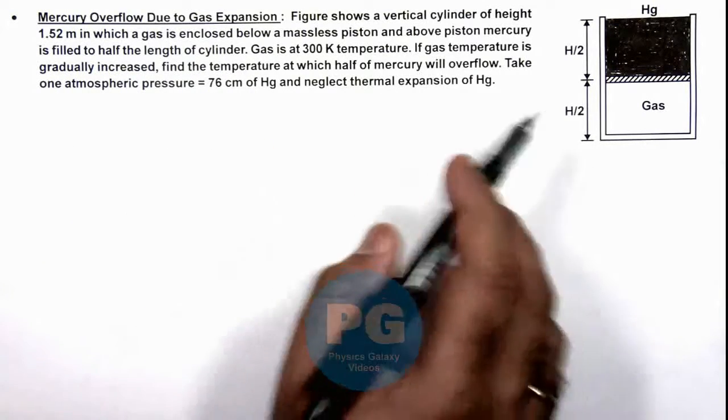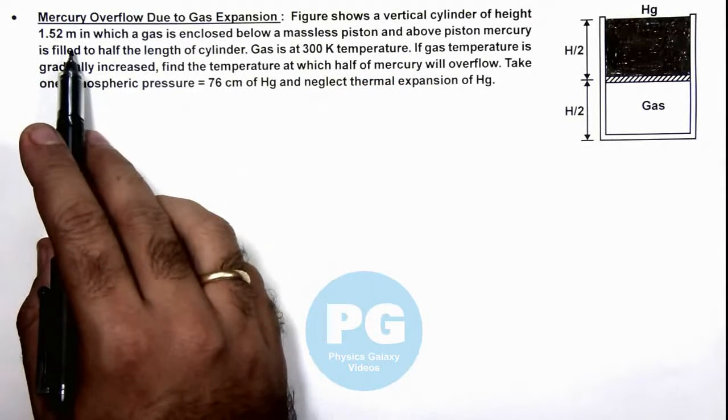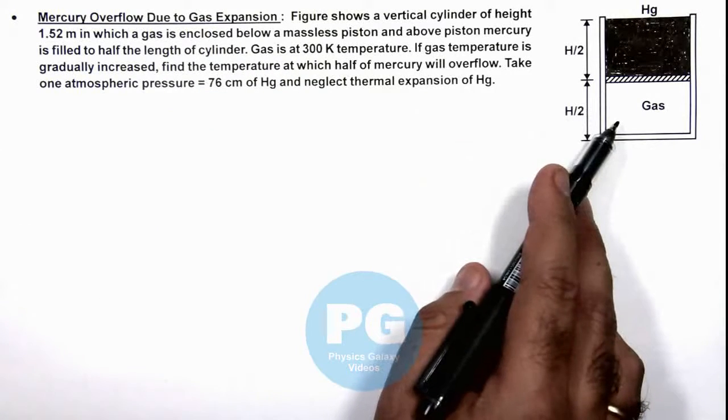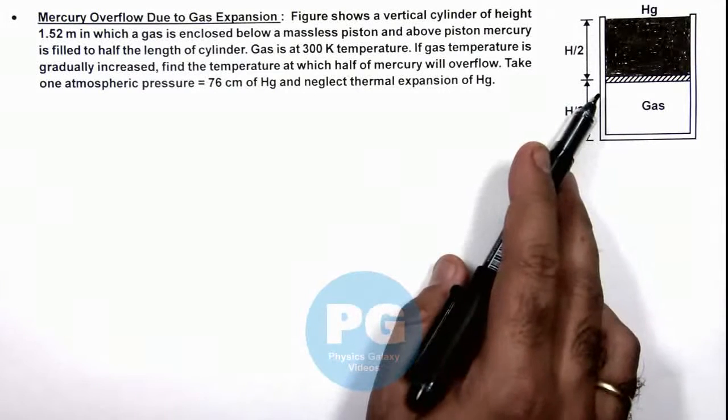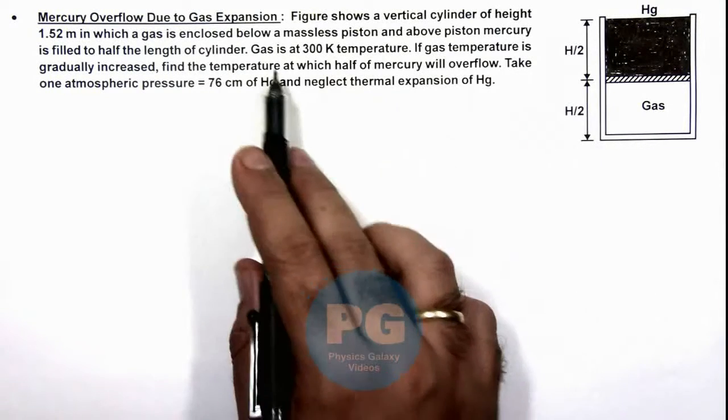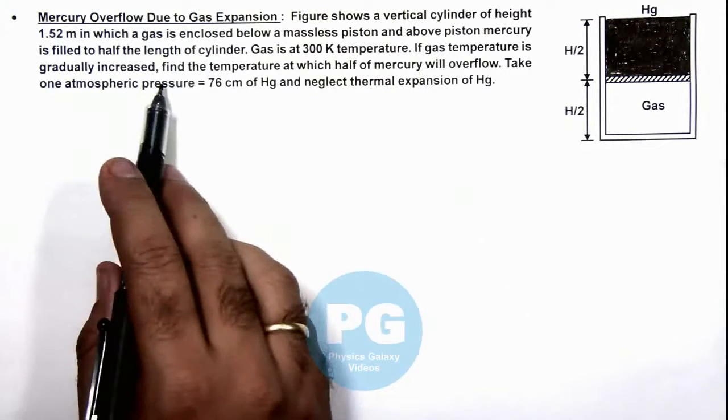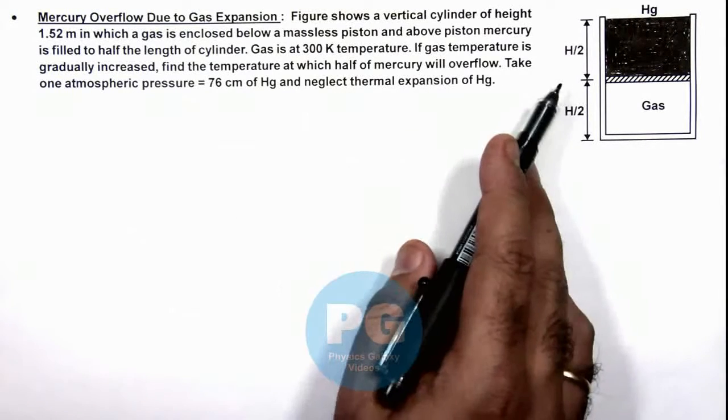Here we are given that the figure shows a vertical cylinder of height 1.52 meters in which a gas is enclosed below a massless piston. Above the piston, mercury is filled to half the length of this cylinder. The gas is initially at 300 Kelvin temperature, and if gas temperature is gradually increased, we are required to find the temperature at which half of mercury will overflow.